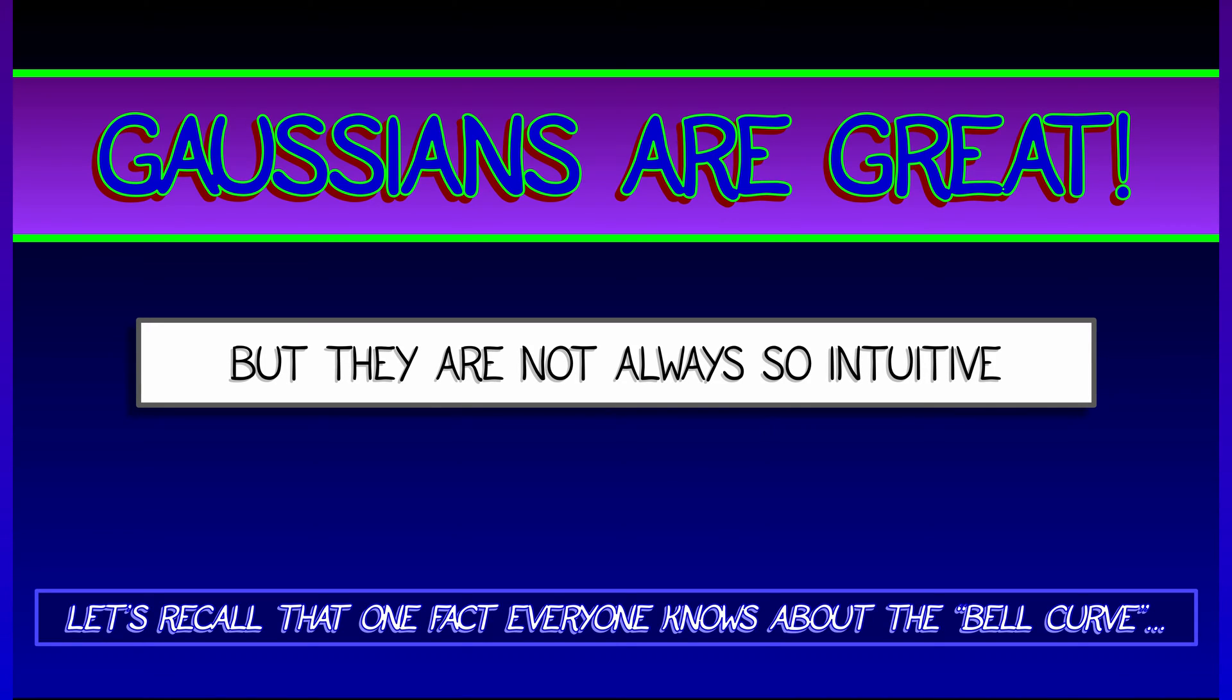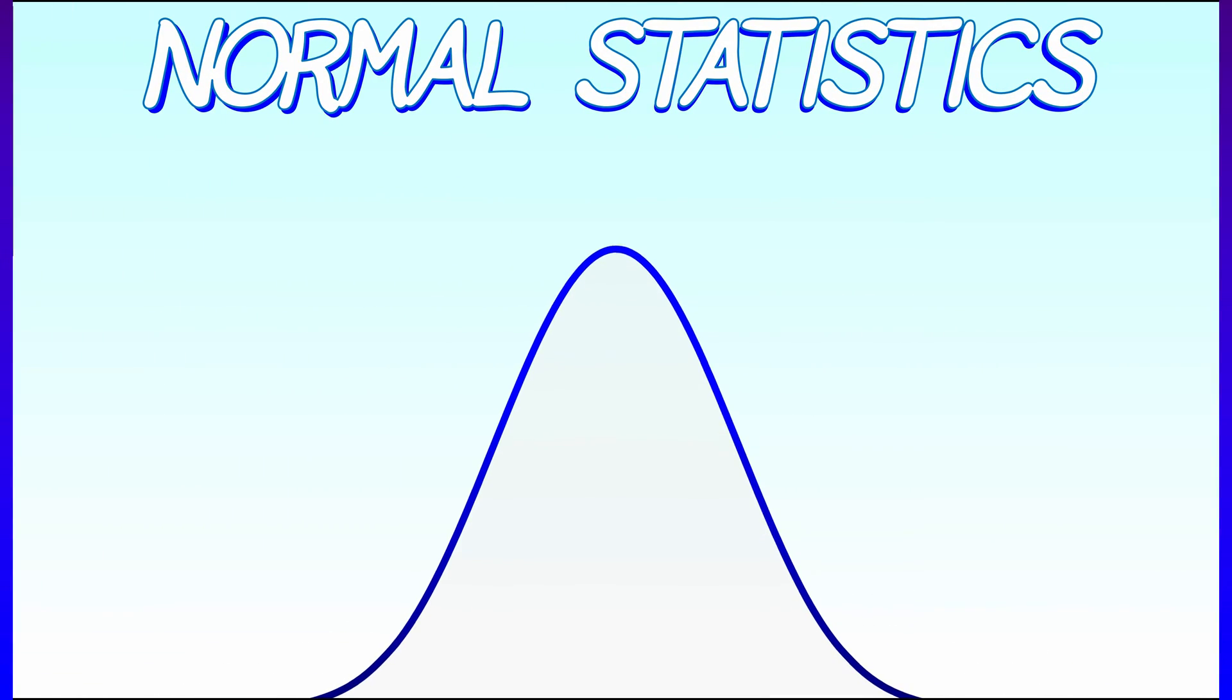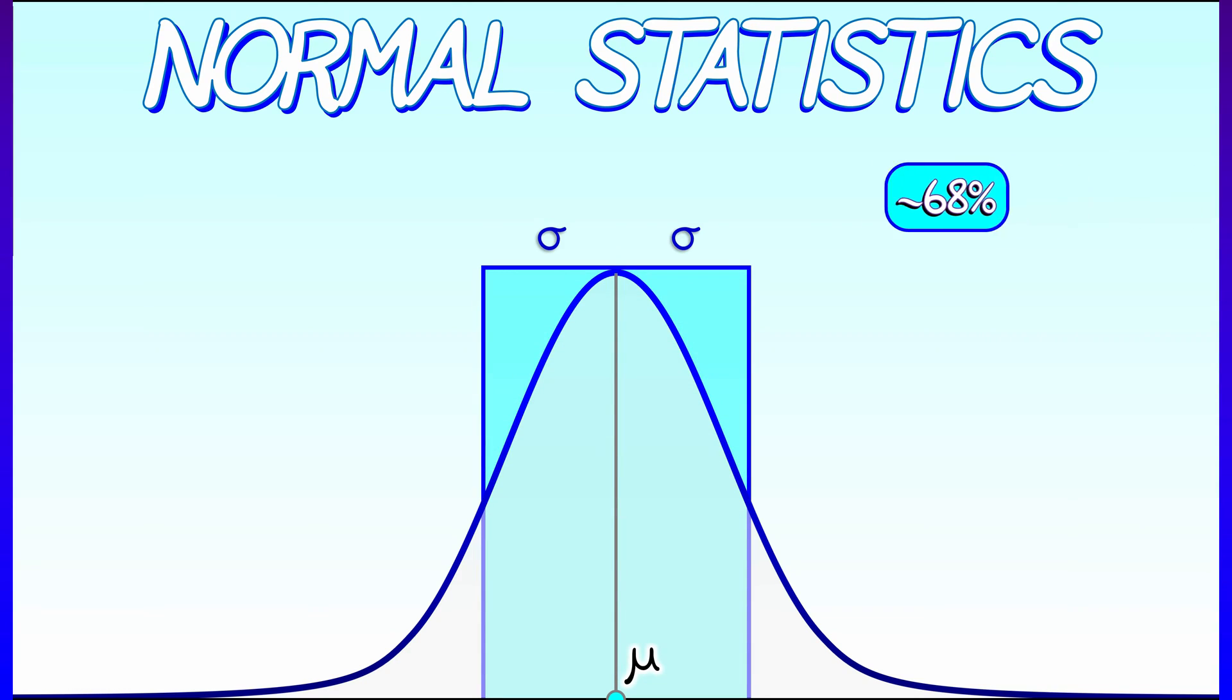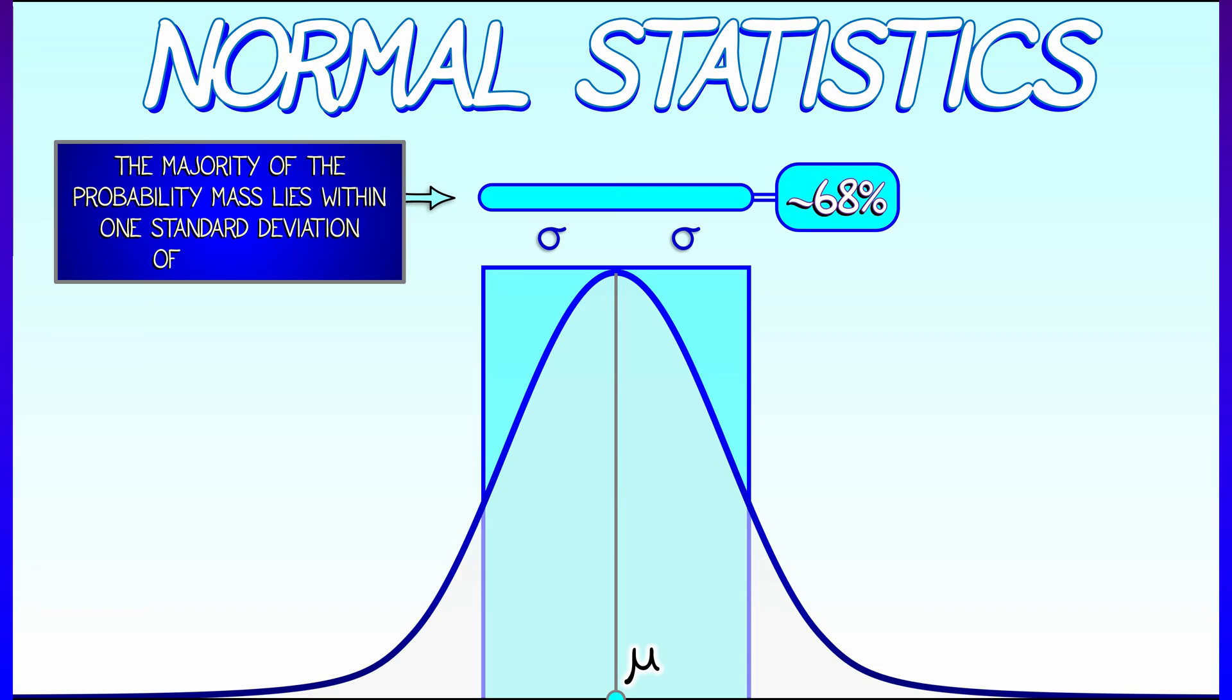Let's drop back to one-dimensional Gaussians, just the standard thing. And remember the thing that we all know. That is, if you look within one standard deviation of the mean, then most of the probability mass lies there.